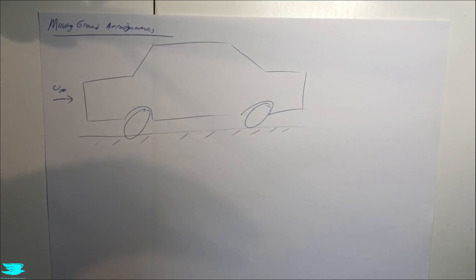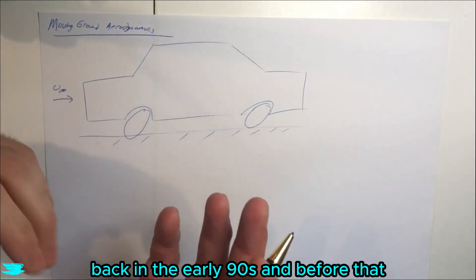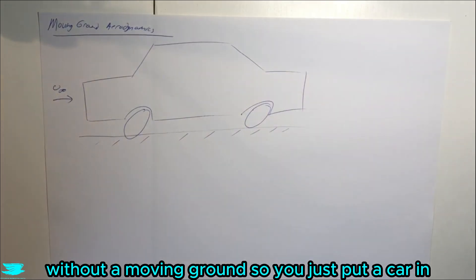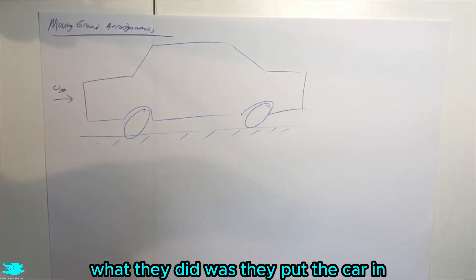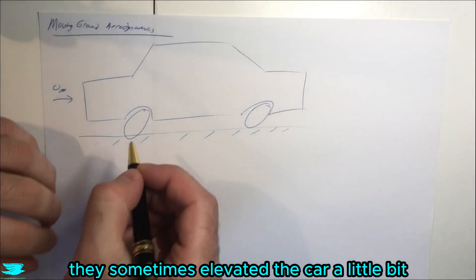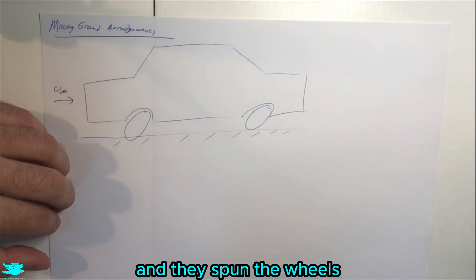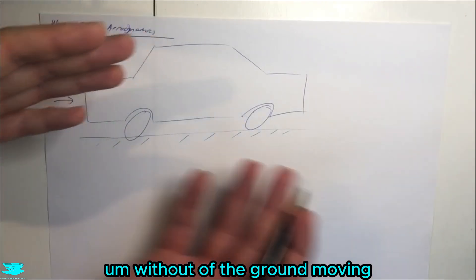To begin with, back in the early 90s and before that, they used to put cars into a wind tunnel without a moving ground. They sometimes elevated the car a little bit so that the wheels were off the ground and they spun the wheels without the ground moving.